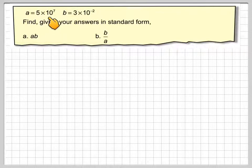If A is equal to 5 times 10 to the 7 and B is 3 times 10 to the minus 2, find, giving your answer in standard form, A times B and B divided by A.